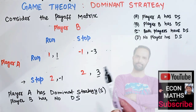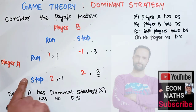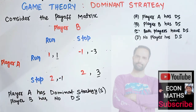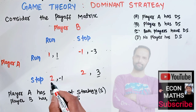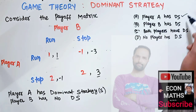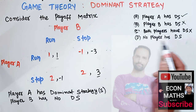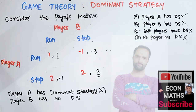Player B has no dominant strategy because his strategies are influenced by player A's strategies, whereas player A's strategies are not influenced by player B. Player A will always choose stop. So the correct answer is that only player A has the dominant strategy. I hope I made myself clear in this video. Thank you.